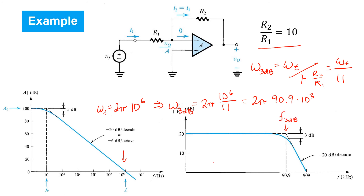If we sketch the frequency response of the inverting configuration, we find that it's constant at very close to its ideal value of negative R2 over R1 — plotted on a dB scale, that gain of negative 10 volts per volt becomes 20 dB — and remains constant all the way up to the 3 dB frequency of 90.9 kilohertz. Beyond there, it starts rolling off with a slope of 20 dB per decade.